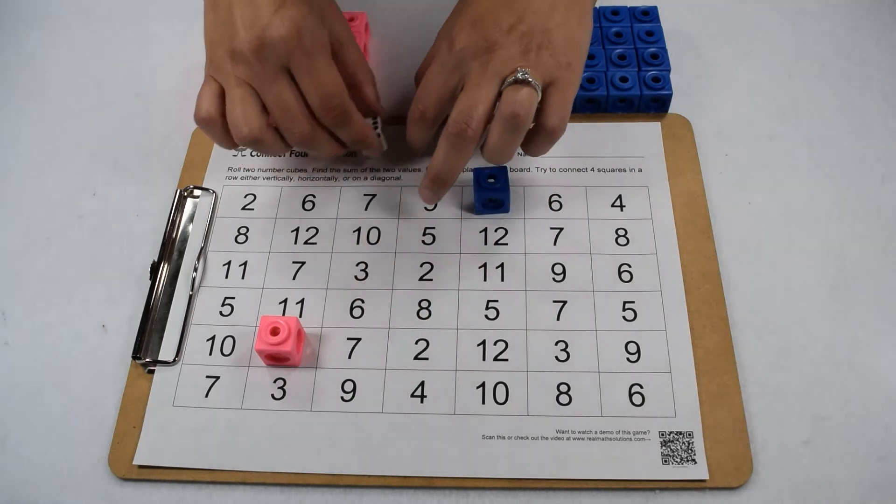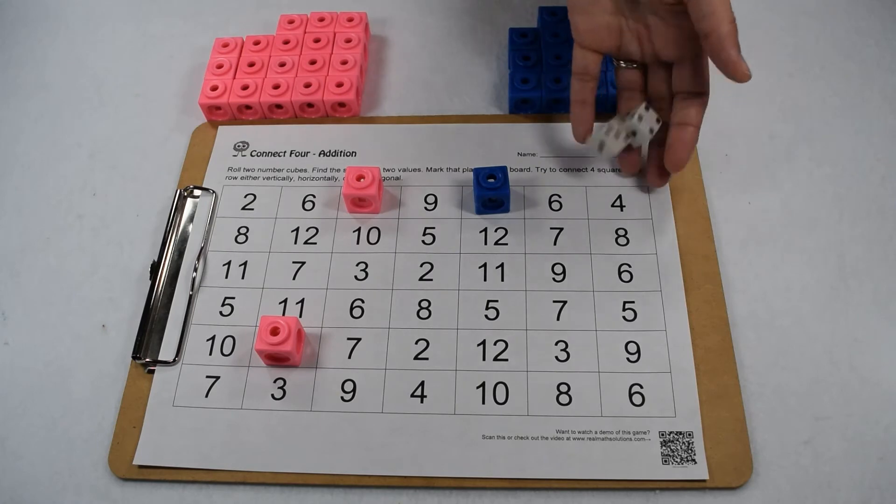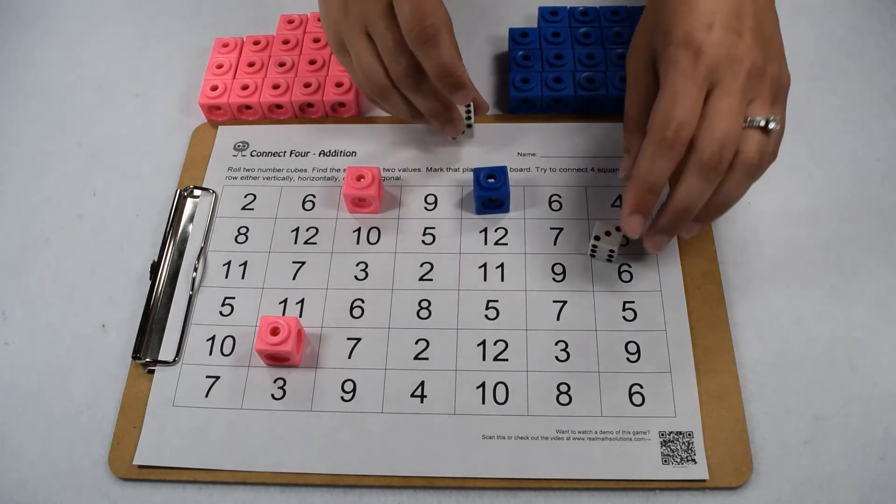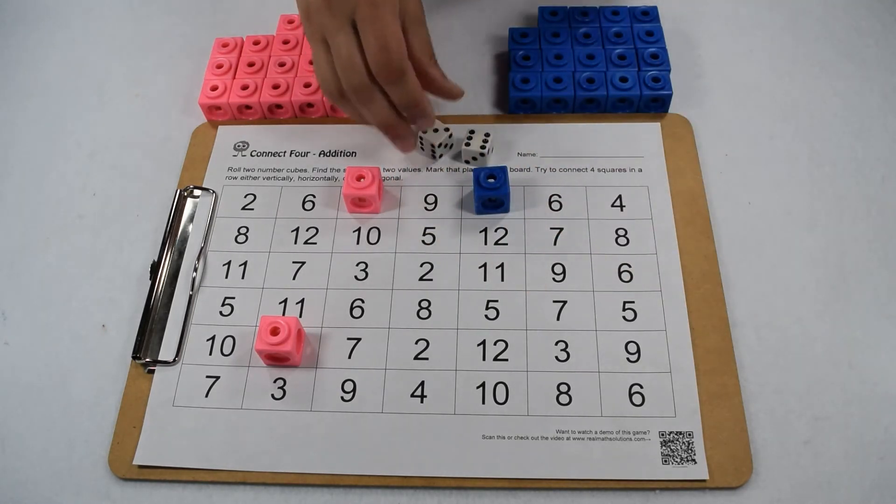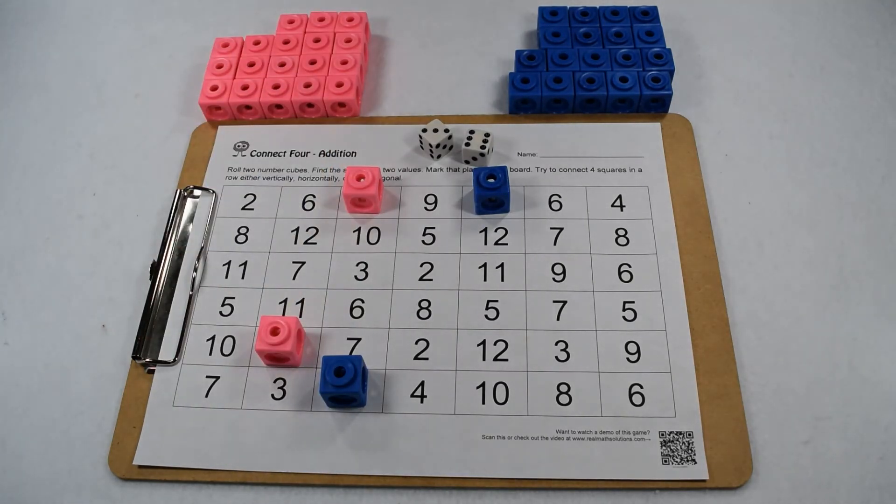Now we're back to player one. They're going to roll again. They got a one and a six, so together that's seven. They're going to mark off a seven on the board. Player two takes their next turn. They got a six and a three, so together that's a nine. They're going to take their marker and mark off a nine.